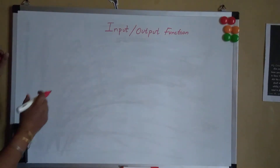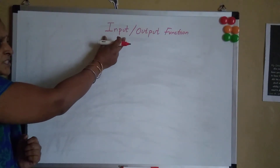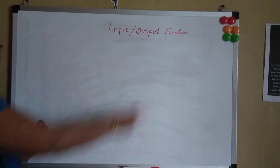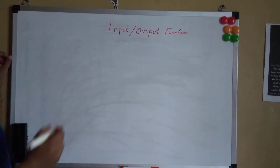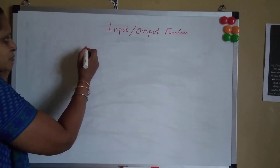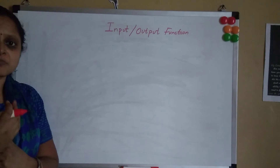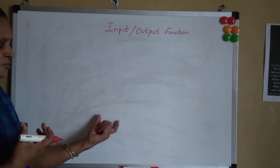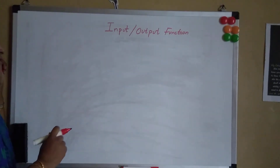At any point of time if we want to fetch data from the user, the input function comes into picture. And at any point if you want to display output to the user, the output function comes in handy. In any programming language, if we want to fetch input from the user at runtime — when the program is running — we use the input function.